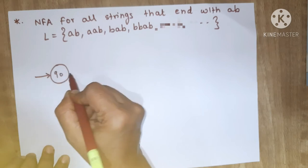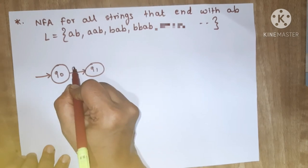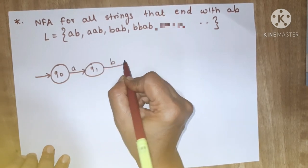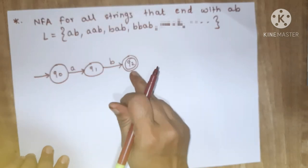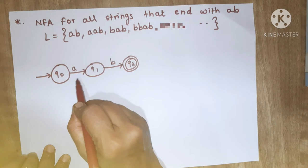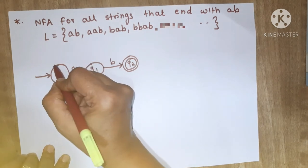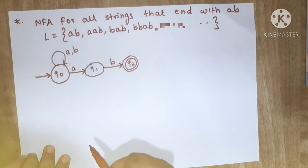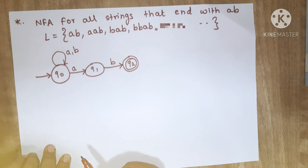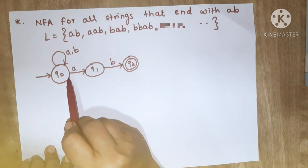So we have state Q0 and state Q1. If I am getting AB at the end I should go to a final state, so Q1 is my final state. Before this AB I can have any combination of A or B, and that's why I will show a self-loop on Q0 for A and B.